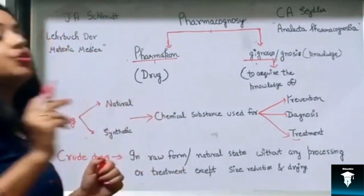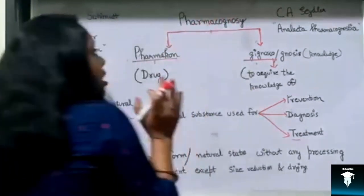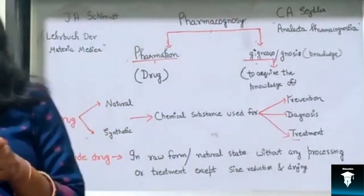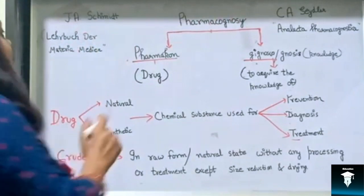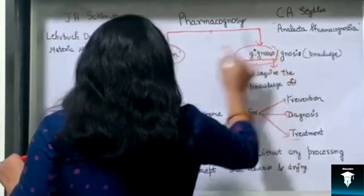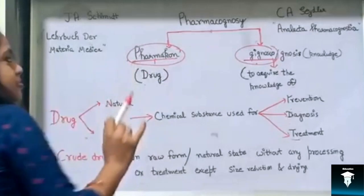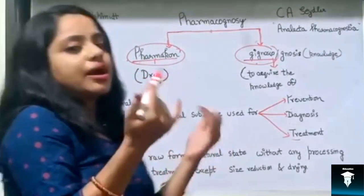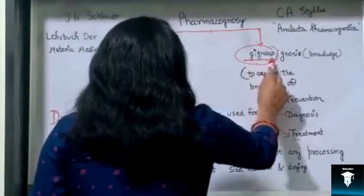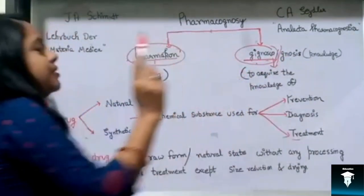Before proceeding, we should know the meaning of the term Pharmacognosy. This word is actually made up of two Greek words: Pharmakon and Ignosco. The meaning of Pharmakon is 'drug' and Ignosco means 'to acquire the knowledge of.' This term Ignosco is sometimes also known as Ignosis, which means 'knowledge.'